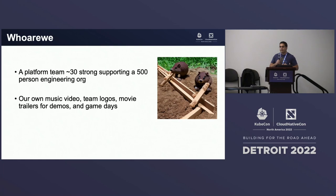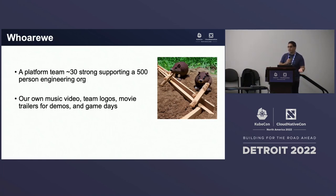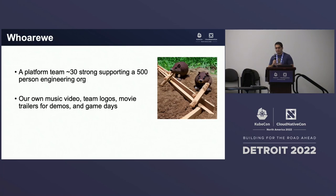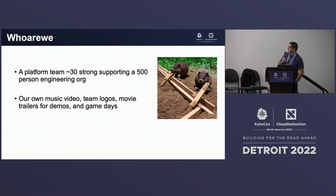In engineering, especially platform DevOps, it's important to remember that it's a team sport. On our team we have about 30 really smart, motivated, happy platform engineers working to make sure all of Relativity works well. We support about 500 different application engineers. We have our own music video, team logos, movie trailers for demos, and fun game days where we see how to break things in production and come back from the dead. Our legal team said I couldn't share those due to copyright, so I used stable diffusion to generate really terrible clip art instead.